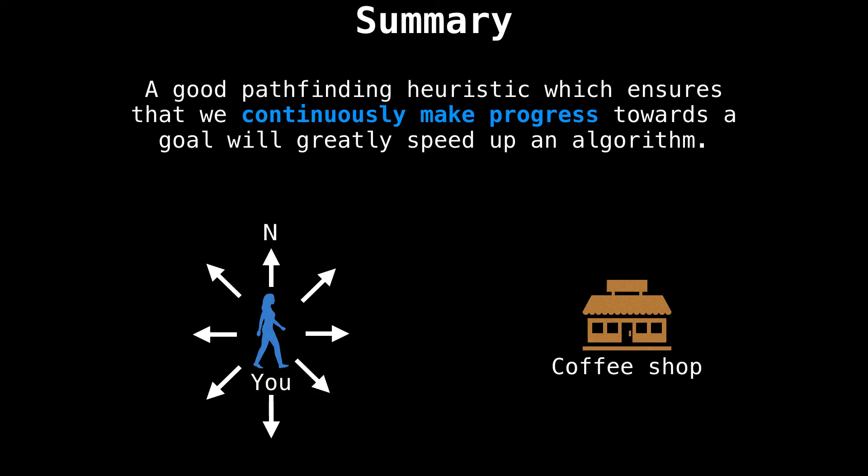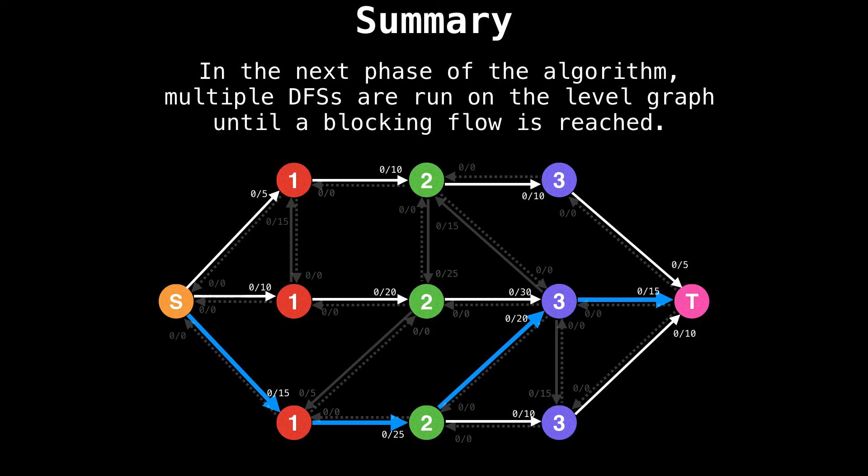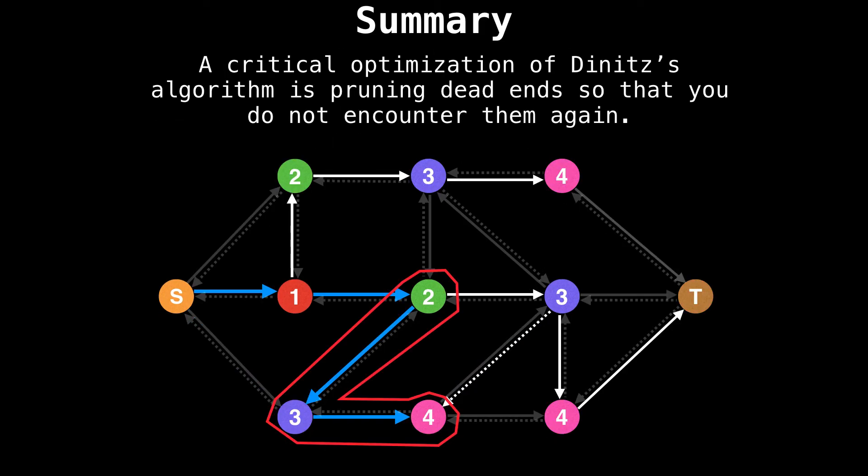Awesome. So that's basically everything you need to know about Dinic's. So let's summarize everything that we've learned. First, we talked about the motivation behind Dinic's, and why having a guiding heuristic can greatly speed up our algorithm. Then we talked about the intuition and practicality behind having a level graph that directs edges towards the sink. Then we talked about the concept of a blocking flow which is achieved by doing multiple depth first searches on the level graph until the graph is saturated. Afterwards, we looked at the process of rebuilding the level graph and finding the blocking flow and doing this process repeatedly until no more augmenting paths exist and the maximum flow is found. And lastly, we talked about a critical optimization of Dinic's algorithm, which is pruning dead ends so that we do not encounter them again.